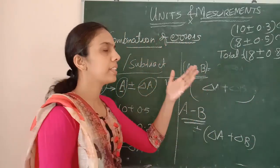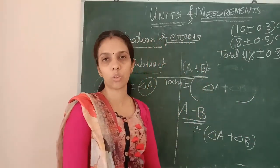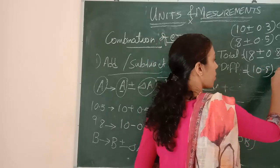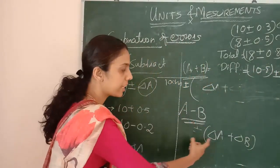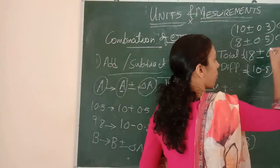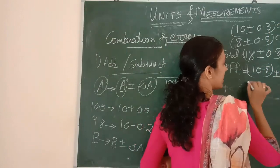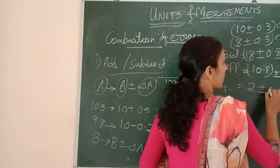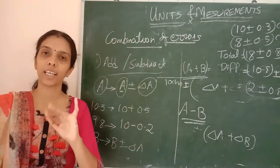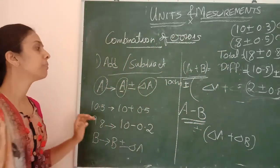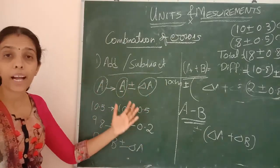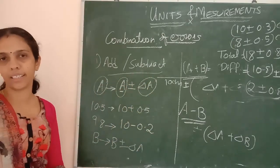If I am finding out the difference in length between these two rods — 10 minus 8 — the errors always add up. So plus 0.5 plus 0.3 equals 0.8. The result will be 2 plus or minus 0.8 centimeter. So whether adding or subtracting, the errors will be added up.